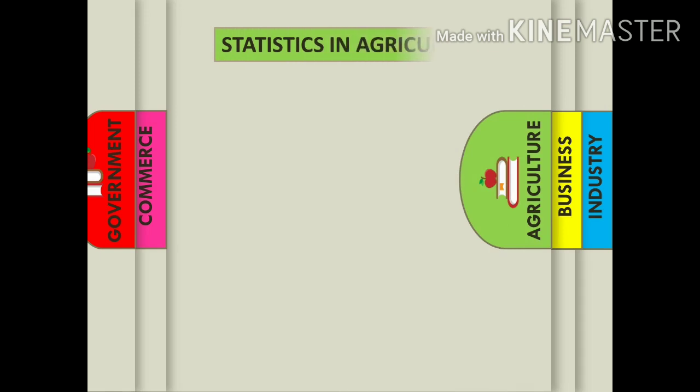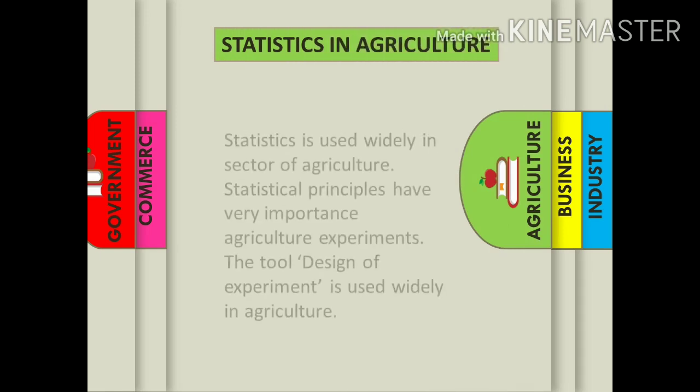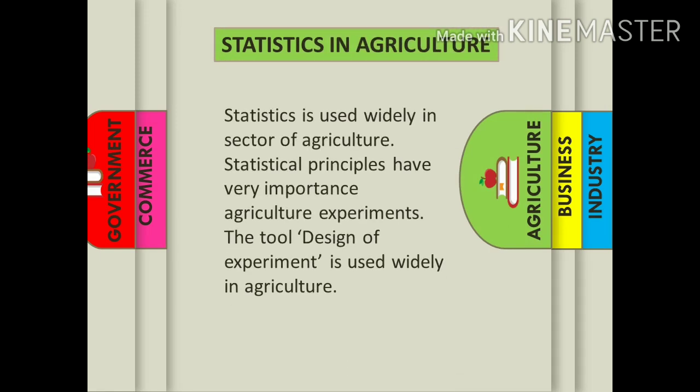Next is statistics in agriculture. India is an agricultural country and statistical techniques are found very useful in this field. Statistical principles have great importance in agricultural experiments. The tool design of experiment is used widely in agricultural studies.